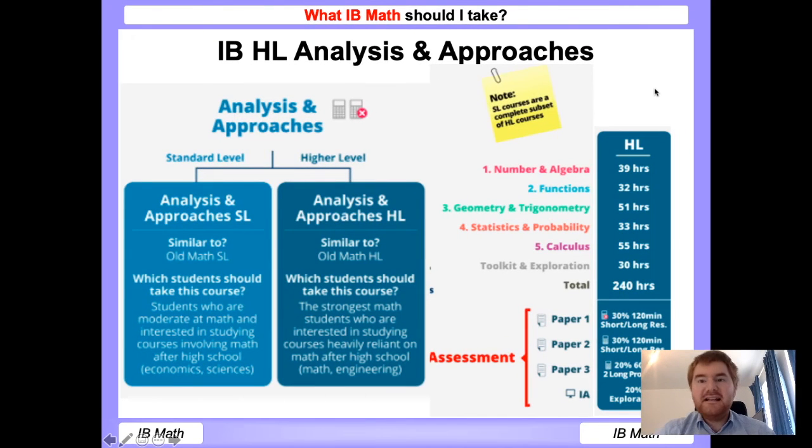And finally, we have high level analysis and approaches, which is perhaps the toughest course out of all four options, and it's the most similar to the old maths higher level. Simply put, if you want to do mathematics at university, or you want to do engineering at university, essentially you need to do this course across the world. Again, check out your country specifics on this. As you can see, there is quite a bit of focus on geometry and trigonometry and calculus, but it's a pretty balanced course. If you're more focused on functions and statistics, you should probably be looking at the high level applications course.